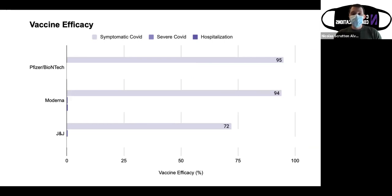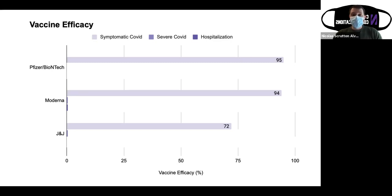I want to take a moment to talk about vaccine efficacy — how well these vaccines protect you against coronavirus. When comparing the three vaccines against each other, we're not exactly comparing the same thing, because the Pfizer and Moderna vaccines tested something different than the Johnson & Johnson vaccine. For Pfizer and Moderna, their vaccine efficacy number was derived from how many people did not present any symptoms of COVID during clinical trials.